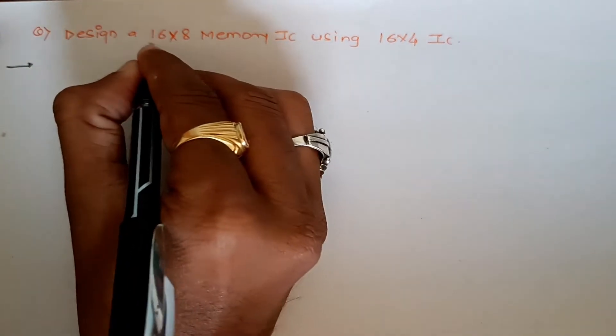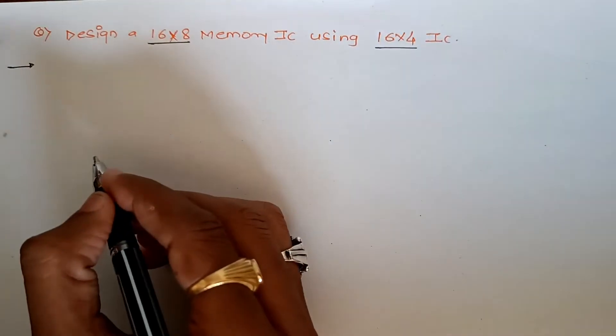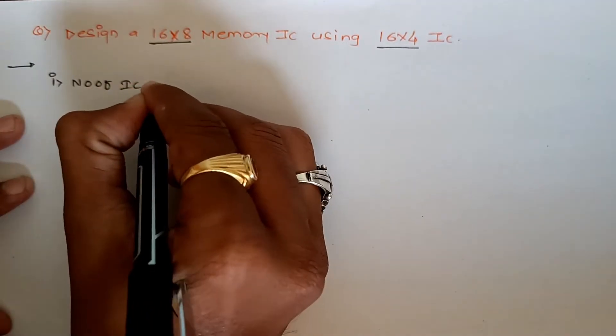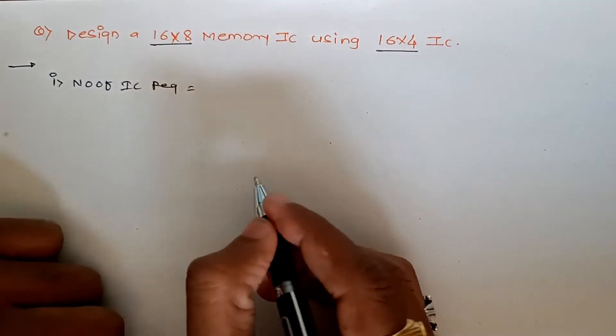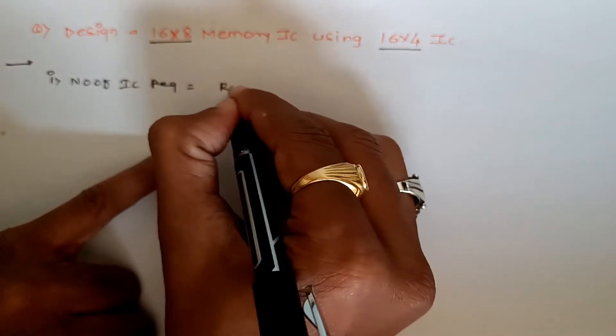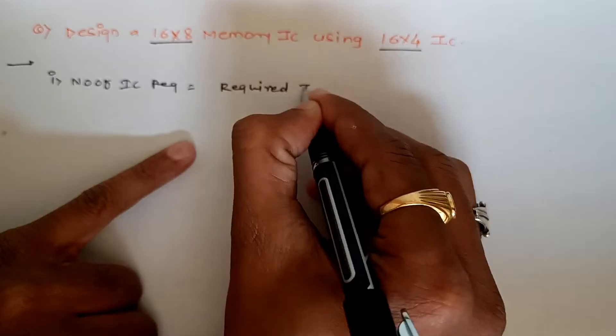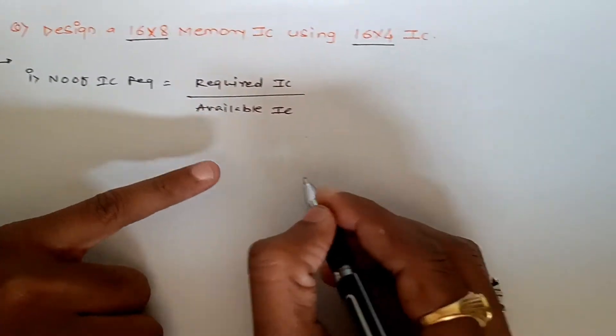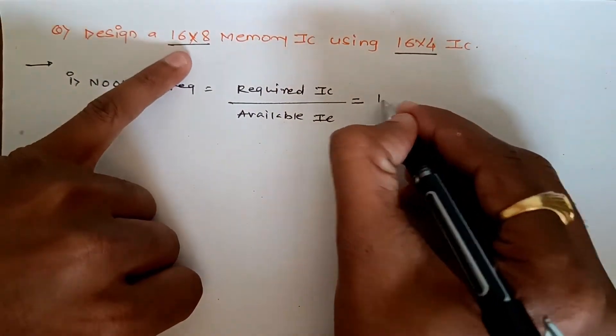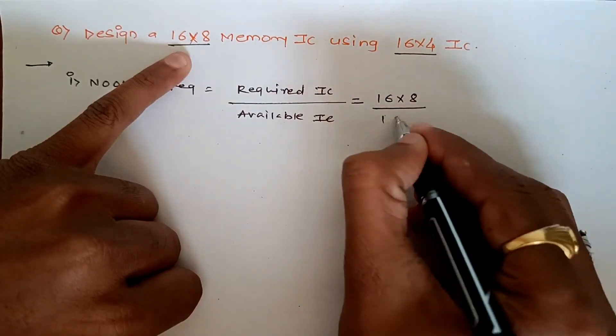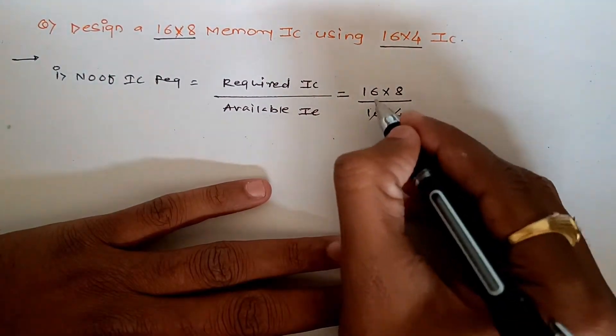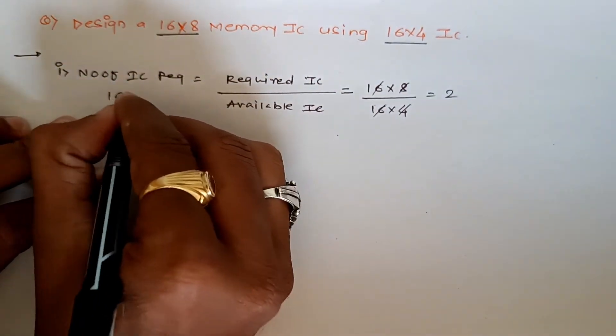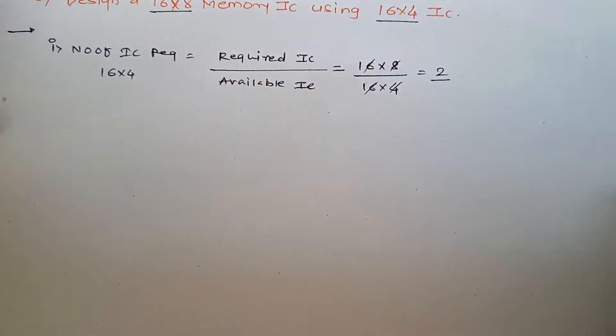To design 16 by 8 using 16 by 4, the first step will be number of ICs required. The formula is: required IC divided by available IC. So 16 by 8 divided by 16 by 4, which cancels to give us 2. That means we'll need two 16 by 4 ICs. That's our first step.